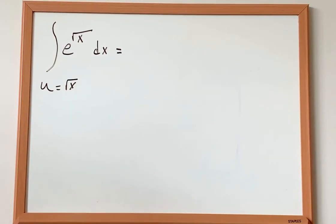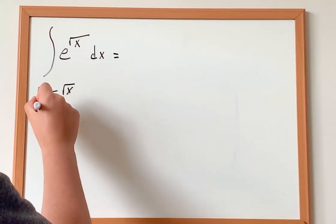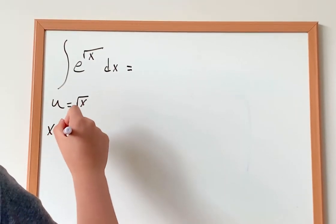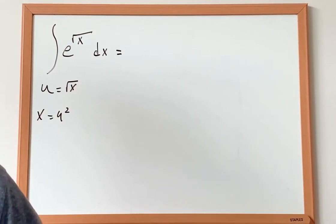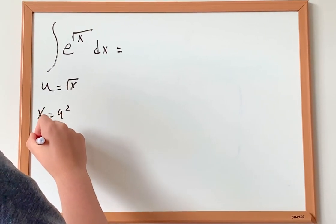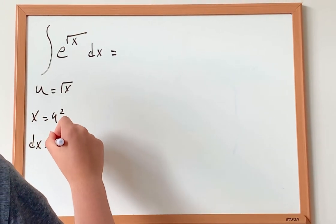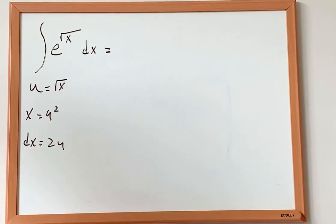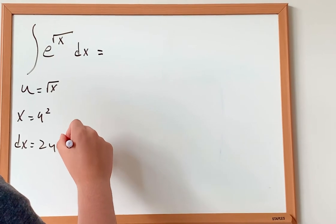And then by definition, we can say that x is equal to, if we square both sides, we get u squared. And now when we differentiate both sides, we get dx is equal to 2u multiplied by du.